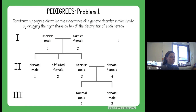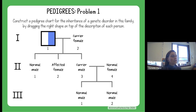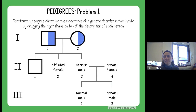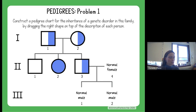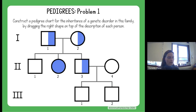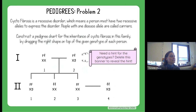Starting at the top: a carrier male is a half-shaded square. A carrier female is a half-shaded circle. A normal male is an unshaded square. An affected female is fully shaded. A carrier male is a partially shaded square. A normal female is an unshaded circle. And then there are two more normal males — plain unshaded squares.